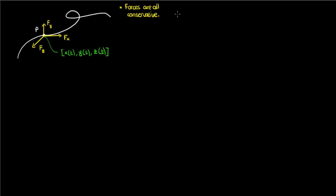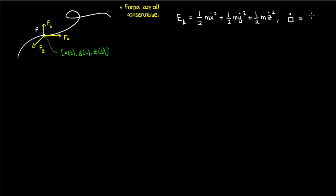Now what's the kinetic energy of this particle? It's given by the sum of the kinetic energies in the x-direction, in the y-direction, and in the z-direction. The dot superscript denotes a derivative in time, so x-dot would be the derivative of x with respect to time, which is just the velocity in the x-direction.